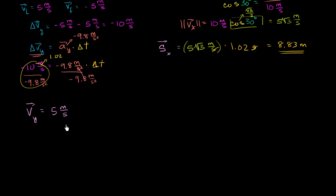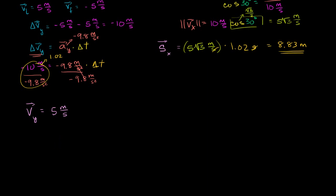As a reminder, our convention when dealing with vectors in one dimension — and this is essentially one-dimensional now since we know it's in the y direction — is that positive means up and negative means down. When dealing with the horizontal direction, positive means to the right and negative means to the left. So just to make sure we have those conventions down.